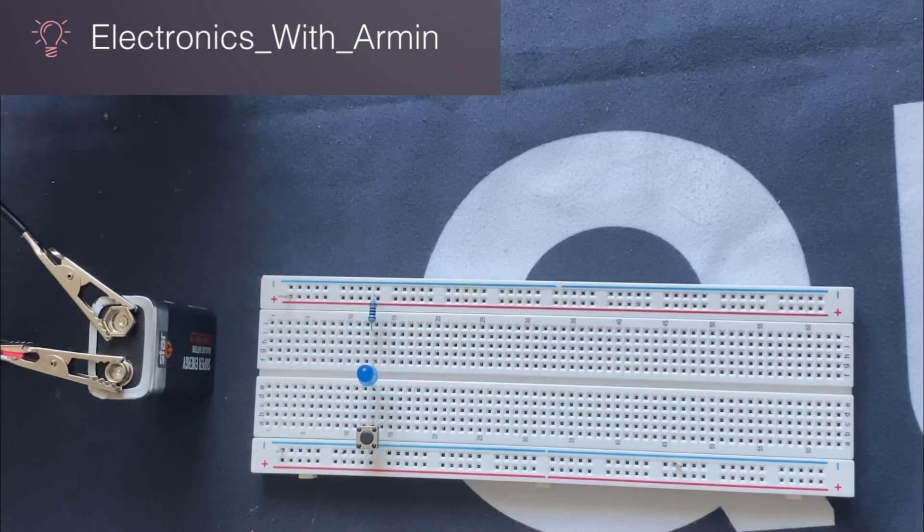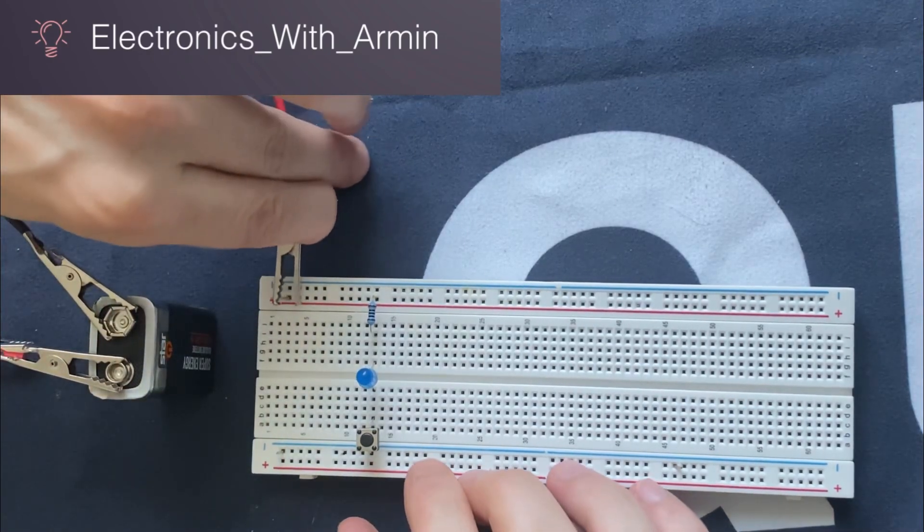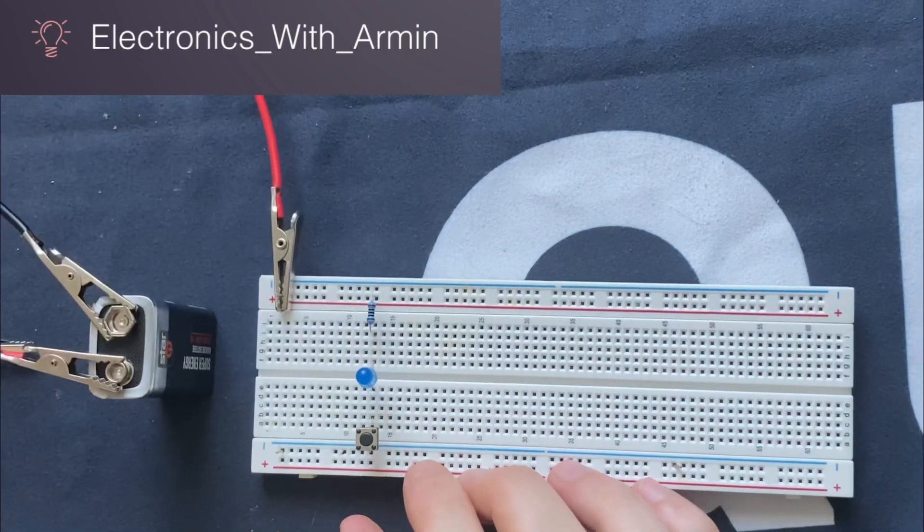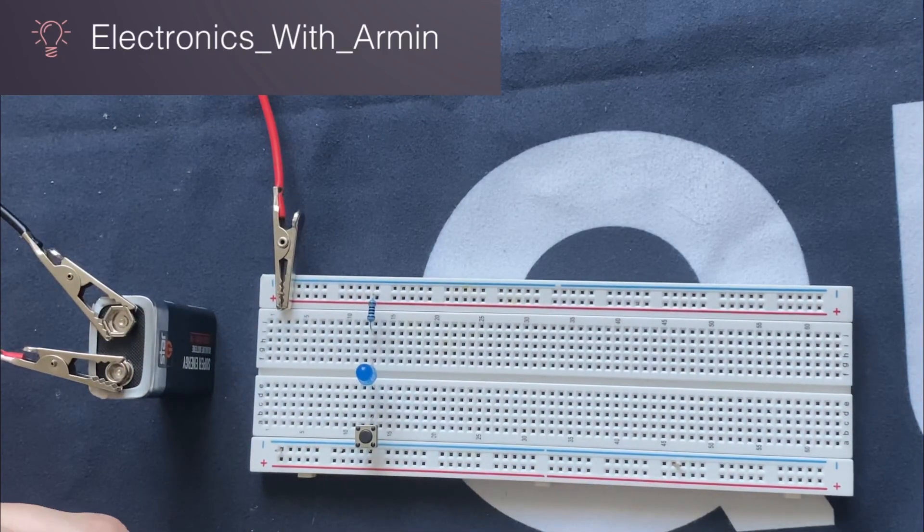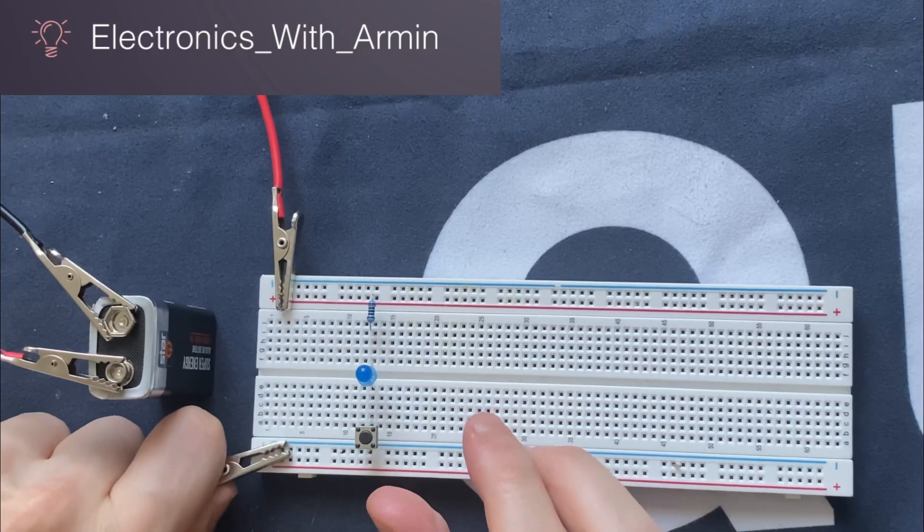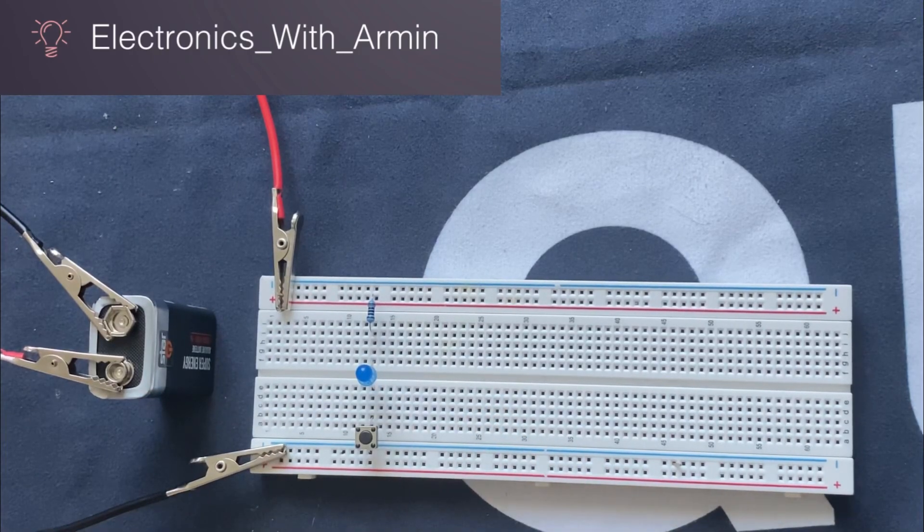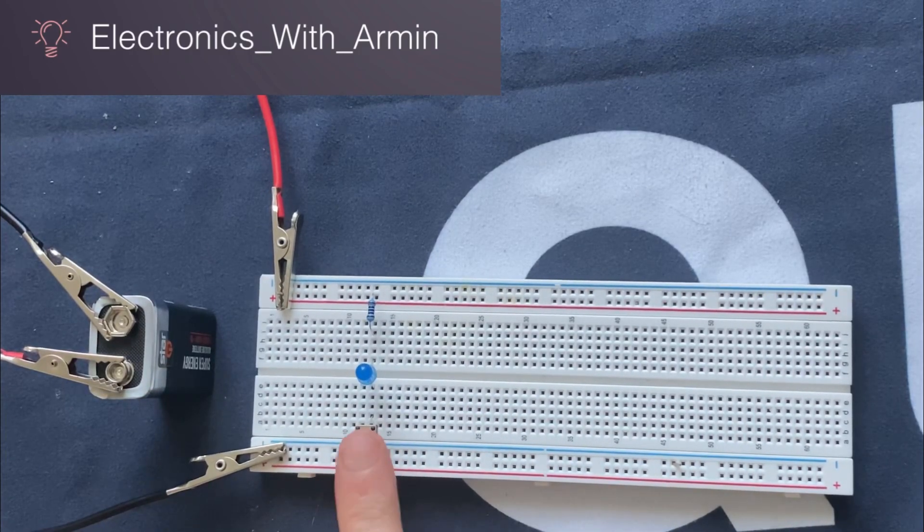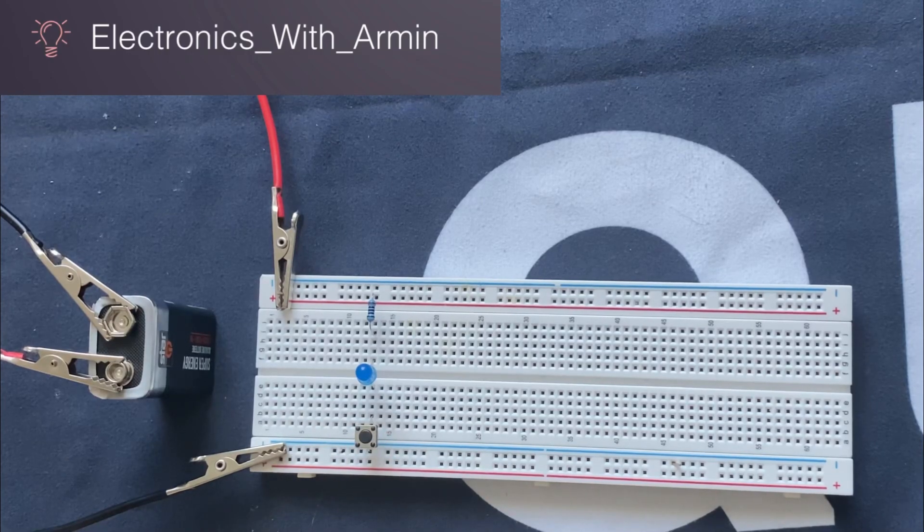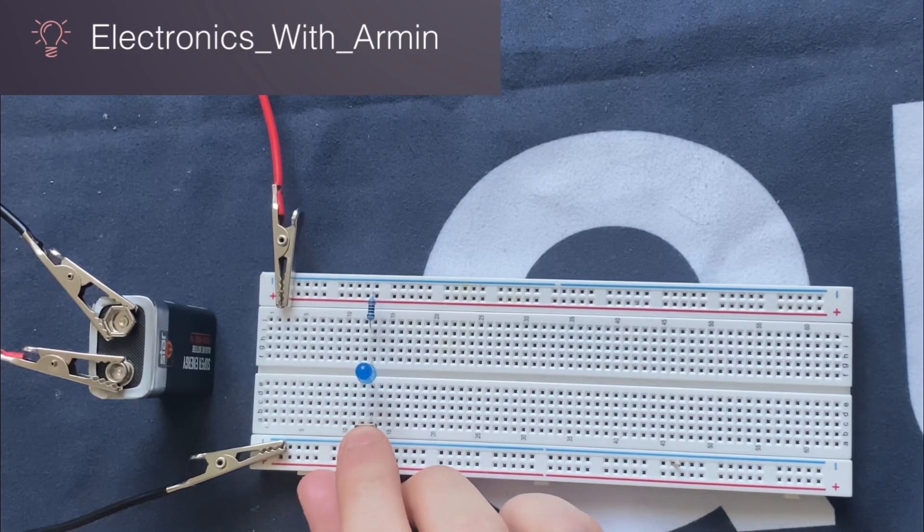I'm going to connect the positive terminal of the battery to the positive rail of the breadboard and the negative terminal to the negative rail. Now when I push this button or switch, the LED should turn on.